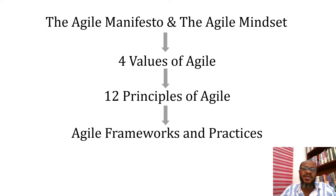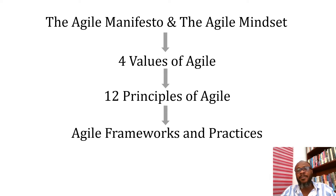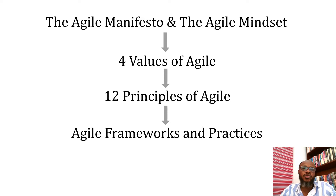There are several frameworks that have been developed based on this mindset, based on this manifesto. We have Scrum, which is an Agile framework. We have Kanban, which is also an Agile framework. We have Extreme Programming, Feature Driven Development, and even the Crystal family — Crystal Clear, Crystal Yellow, Crystal Orange, Crystal Red. These are all popular Agile frameworks with a common ancestry within the Agile manifesto. You can understudy any of these frameworks and adopt the ones closest to what you do.